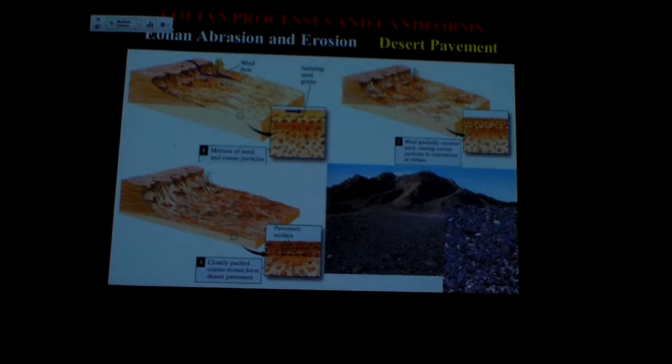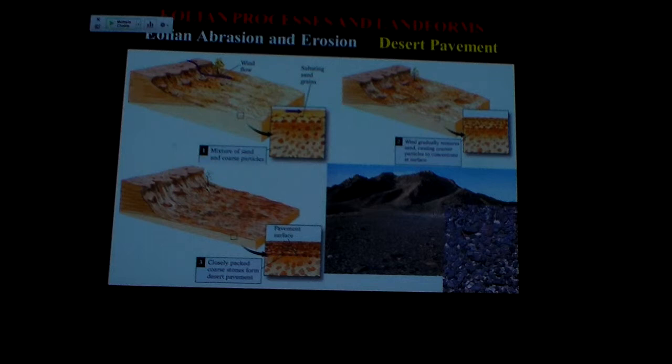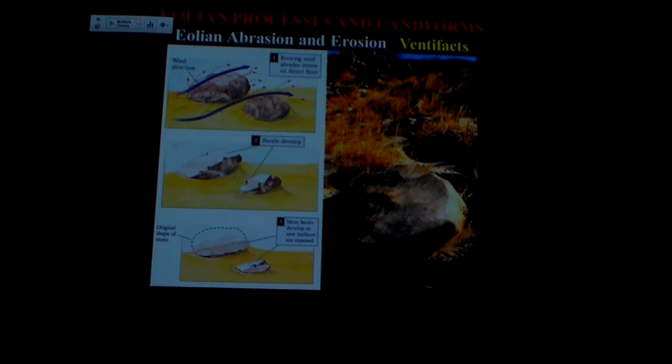This is what we call desert pavement, and it's exactly what it sounds like. It armors the surface — the fine material in between the bigger grains is blown out. The bigger grains clink together, lock together, and over time settle into basically a layer on the surface that armors it from losing any more fine material. It's sitting on top of regular material. The pavement actually does look like it's man-made, but it's all natural.